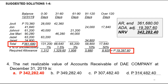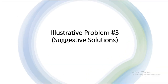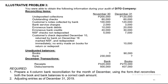Illustrative problem number three covers proof of cash — the four-column bank reconciliation. You obtained the following information during your audit of Dito Company. The requirement is to prepare a four-column bank reconciliation for the month of December using the adjusted balance method, and to prepare adjusting entries as of December 31, 2019.